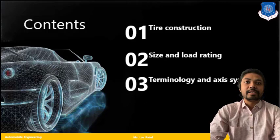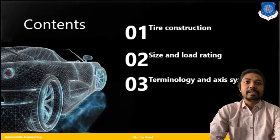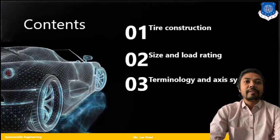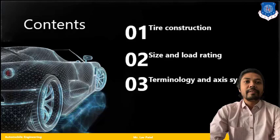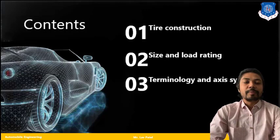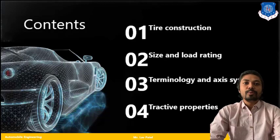Third is the terminology and axis system. As in the previous lecture we have seen about the different axis system with respect to planes, again we are going to discuss with respect to tire for that particular axis system. And fourth, there are several tractive properties that we have to keep in mind regarding tires.